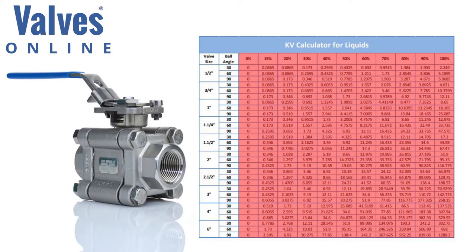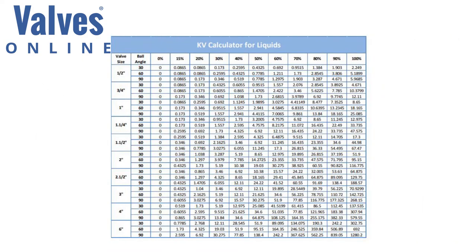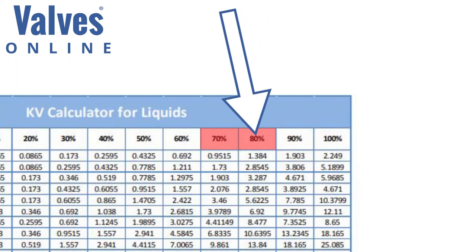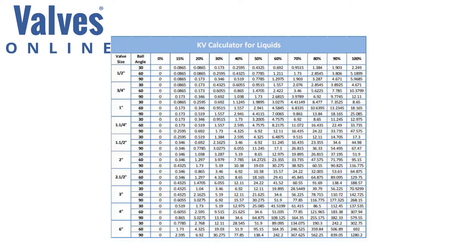To select the flow you require and size up the correct control valve, you'll need to have your flow figure or set point. In selecting the valve, you should aim to look at between 70 to 80 percent open — this will give you between 20 to 30 percent extra flow capacity if needed in future.